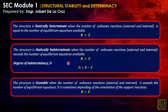We can calculate the degree of indeterminacy D by subtracting R and E. The structure is unstable when the number of unknown reactions is less than the number of equilibrium equations. This sometimes depends on the orientation of the support reactions, so we should investigate the orientation of supports first.